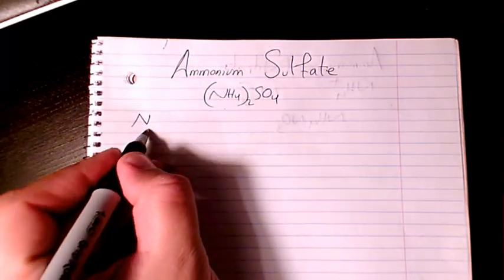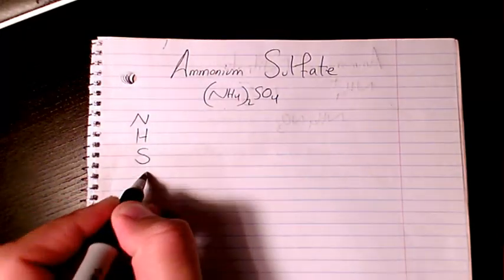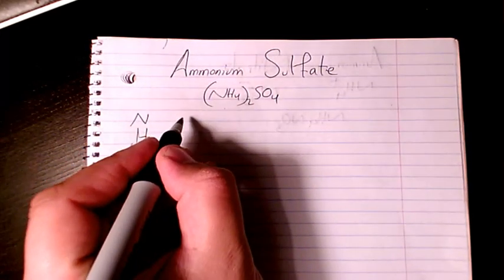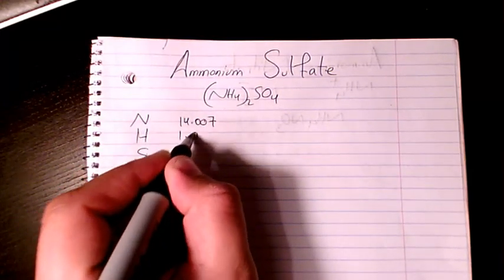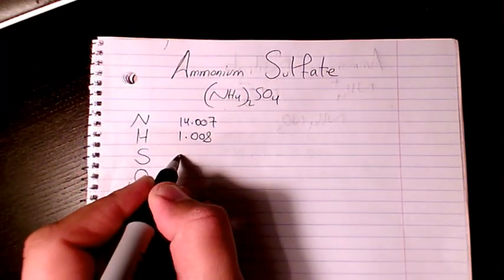We have nitrogen, hydrogen, sulfur, and oxygen. Nitrogen is 14.007, hydrogen is 1.008, sulfur is 32.06, and oxygen is 15.999.